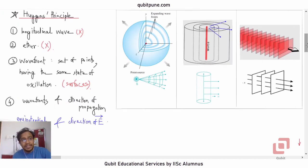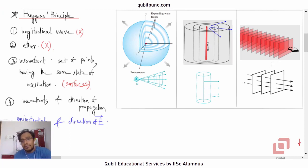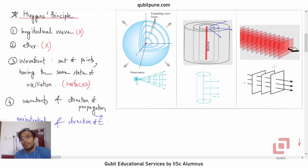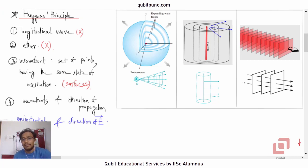So why do we need these wavefronts? To explain the phenomena of reflection and refraction of light, we consider even the simplest case — oblique incidence on a flat surface — but we still need the ideas of wavefronts and wavelets.